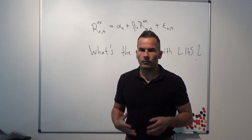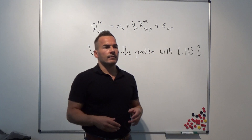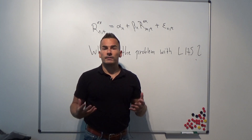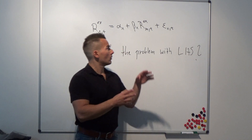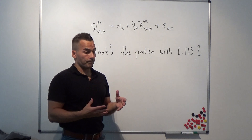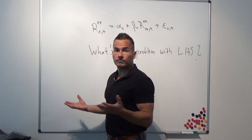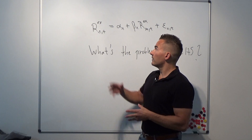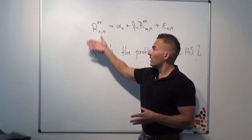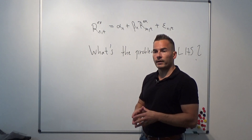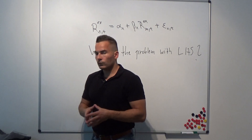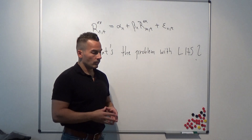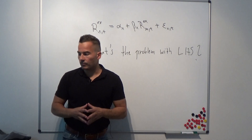The problem with the left-hand side approach is that it doesn't give you unambiguous results. Your results can be ambiguous — they are not unique, depending on what you use as left-hand side variables. Therefore, the authors propose a right-hand side approach.